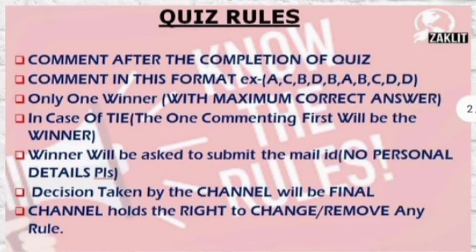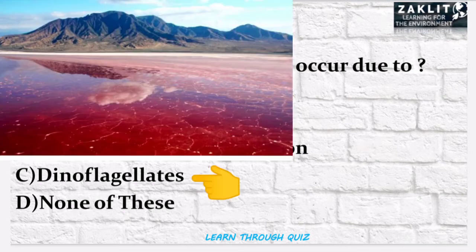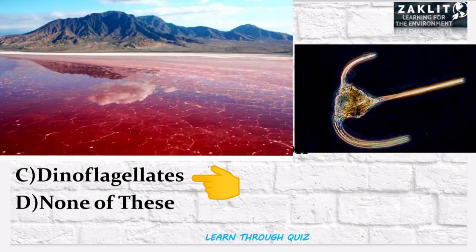These are the rules for the quiz contest — you can pause the video to see the rules. The first question was: red tides in water bodies occur due to which of the following? The correct option is C. As you can see in this picture, red tides are formed due to the presence of dinoflagellates, which have two flagella and are responsible for bioluminescence.